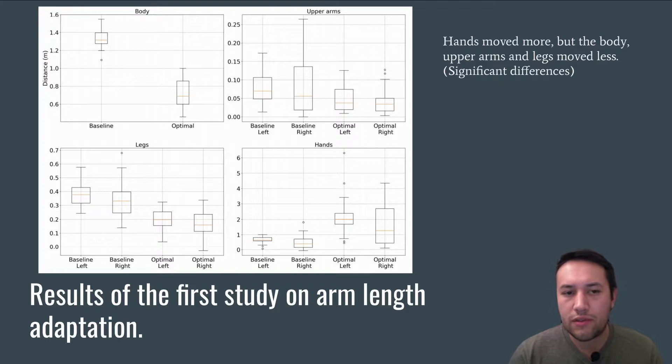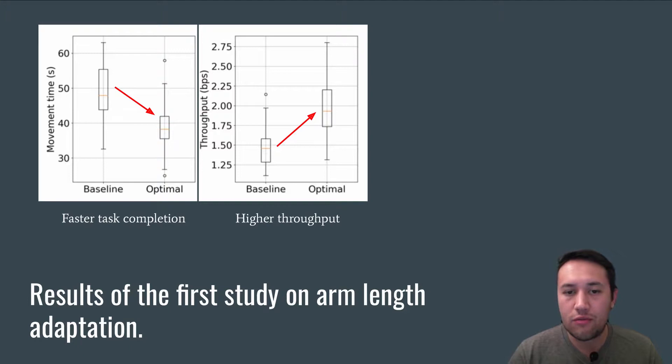Looking closely at the performance, we could see that the distances moved by each body part was overall lower for the optimal avatar, and the task time and throughput were both significantly improved.